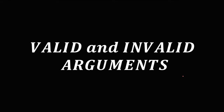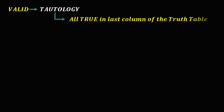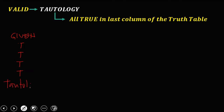Let's discuss valid and invalid arguments. An argument is valid if it is a tautology — meaning all values in the last column of the truth table are true. When constructing a truth table, if the value of the last column is all true, then it is a tautology. But if the value of the last column is all false, then the truth table is a contradiction.